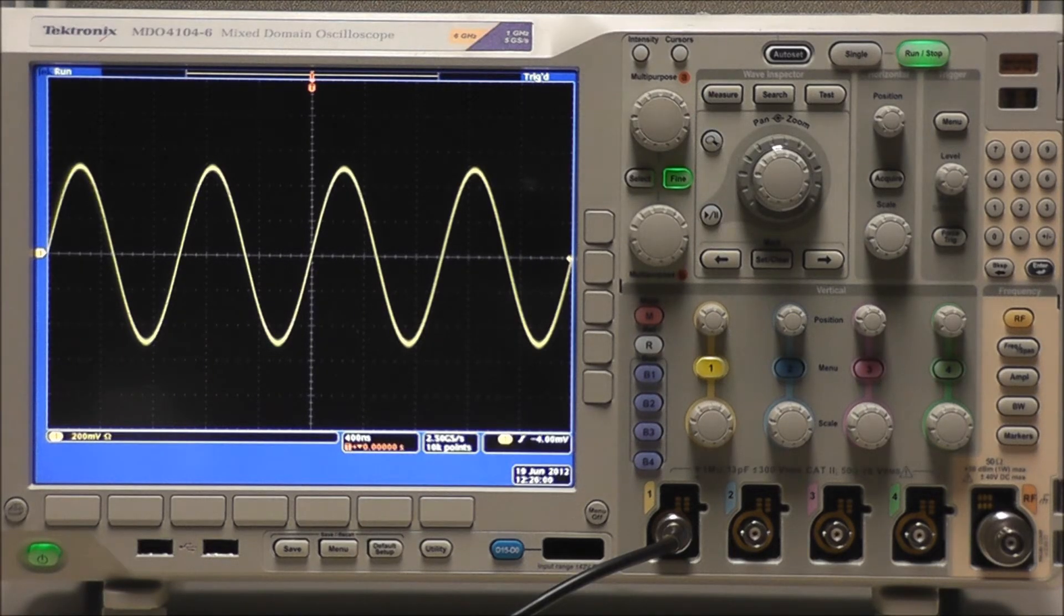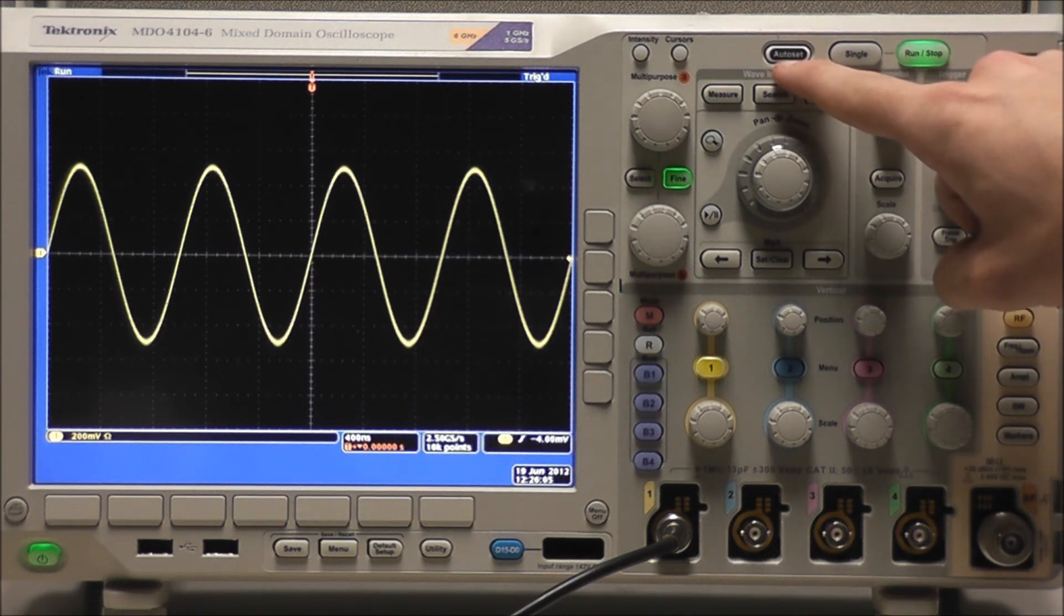So we have a few controls for the basic functionality of triggering. Autoset, which will automatically set the vertical, horizontal, and trigger controls for a usable and stable display.